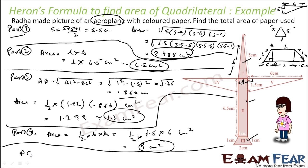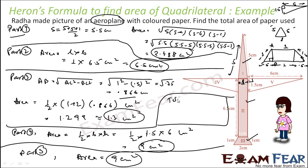Similarly, part 5 area is equal to area of part 4, which is 4.5 centimeter square. So the total area of the whole figure equals area of part 1 plus 2 plus 3 plus 4 plus 5. Adding all these areas gives approximately 19.29, almost 19.3 centimeter square. That is how you find the area of this aeroplane figure using the concepts of Heron's formula.